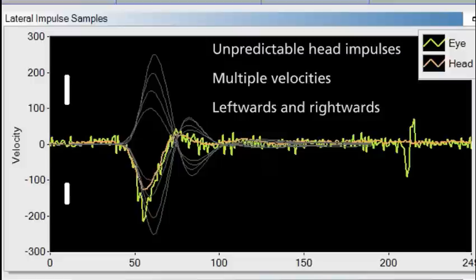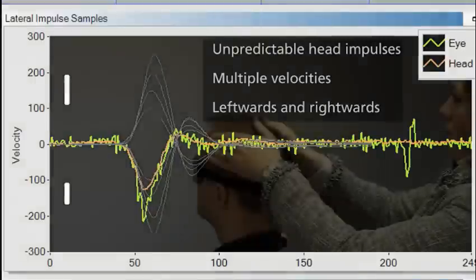You want to make sure the patient cannot predict which direction and at what velocity the head impulse will be performed.